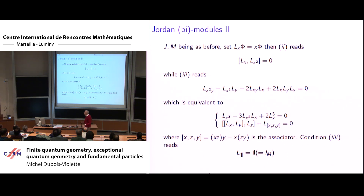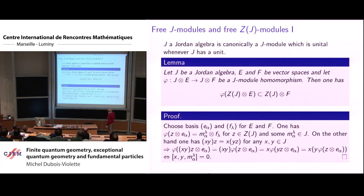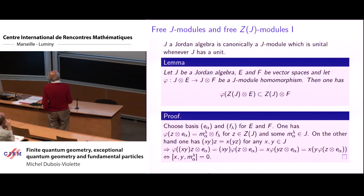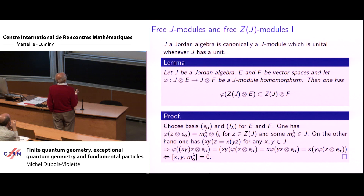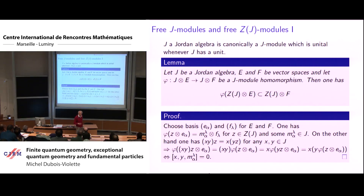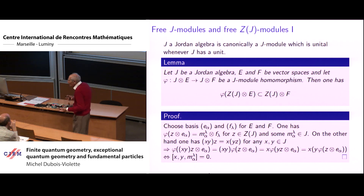These derivations are called inner derivations. In all the simple Jordan algebras from the classification list, all derivations are inner, so you are sure not to miss any derivation when you take this. There is something I think should have a generalization but I have not had time to look at: if you look at the free Jordan module, and free modules over the center — since the center is an associative commutative algebra, modules over it are a well-known theory.